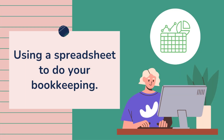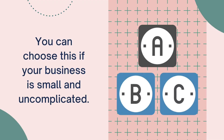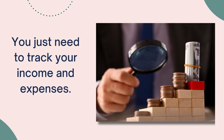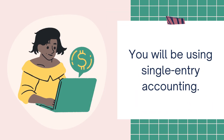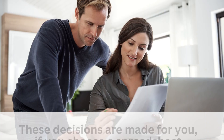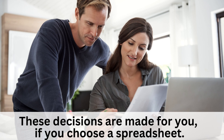Let's start with the option of using a spreadsheet to do your bookkeeping. You can choose this option if your business is small and uncomplicated and you just need to track your income and expenses in a fairly basic way. If you do this, you will effectively be using single entry accounting and doing your books on a cash basis. So as you can see, these decisions are made for you if you decide to use a spreadsheet.